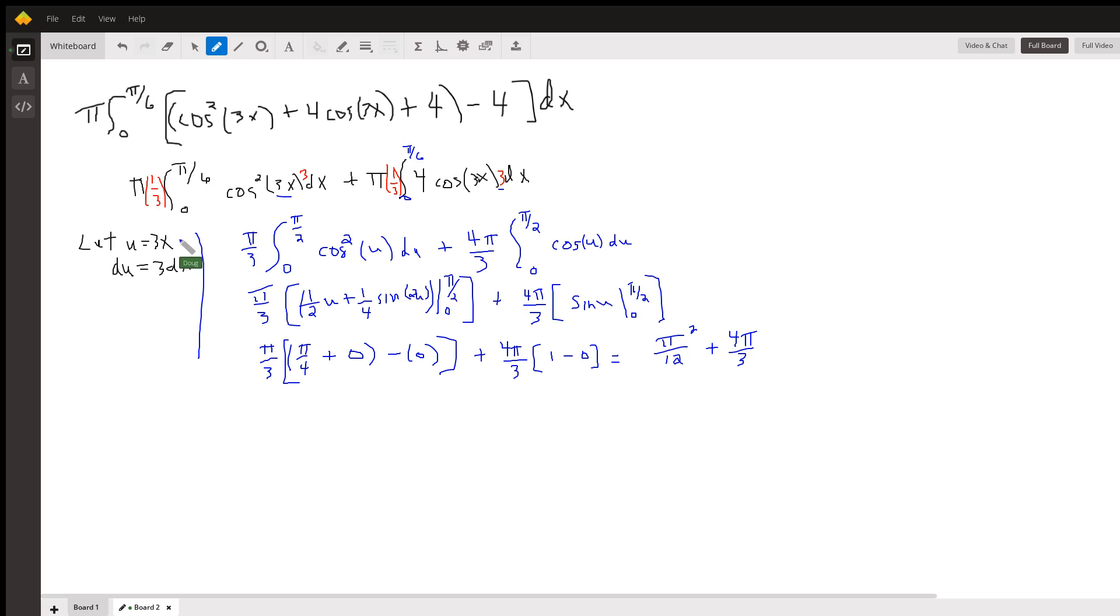So when x is 0, u is 0. When x is pi over 6, picture putting pi over 6 in for this x. 3 times pi over 6 is pi over 2. So this row right here is what you get after you've completed your u substitution.